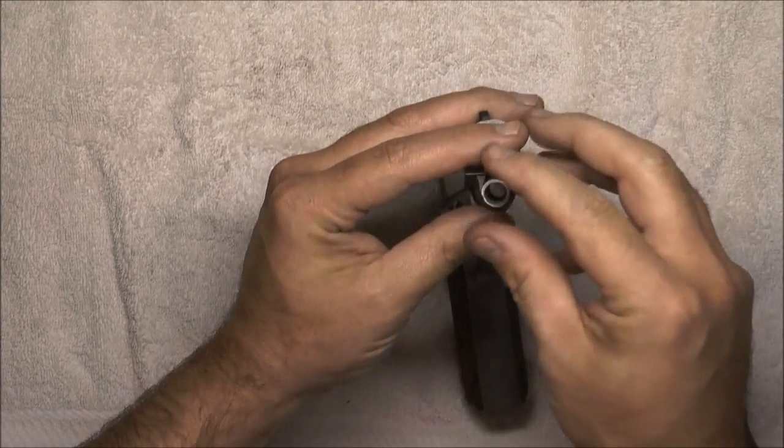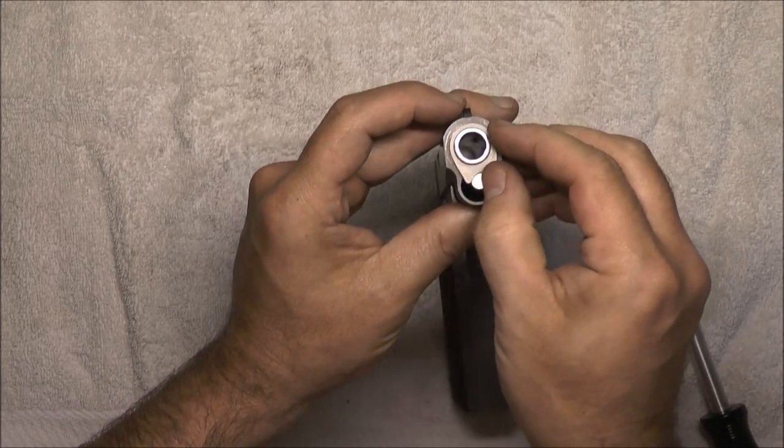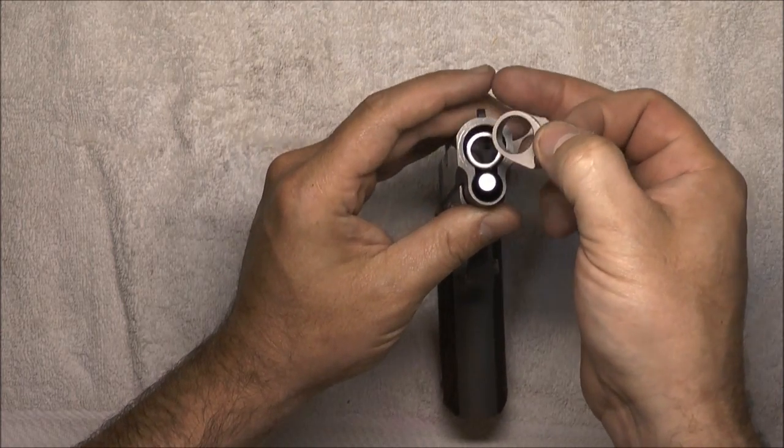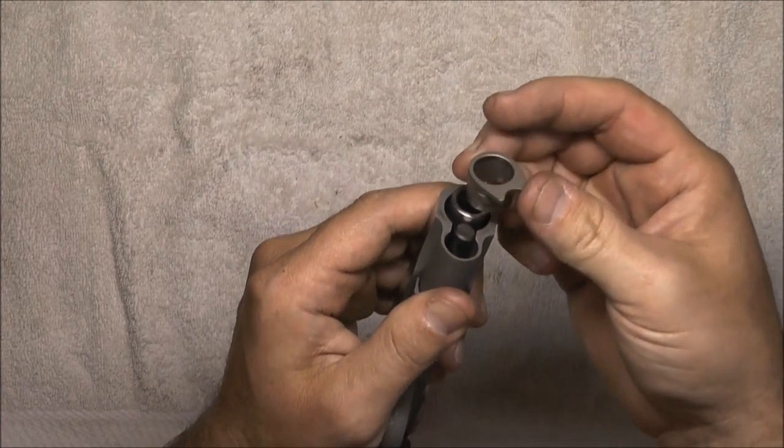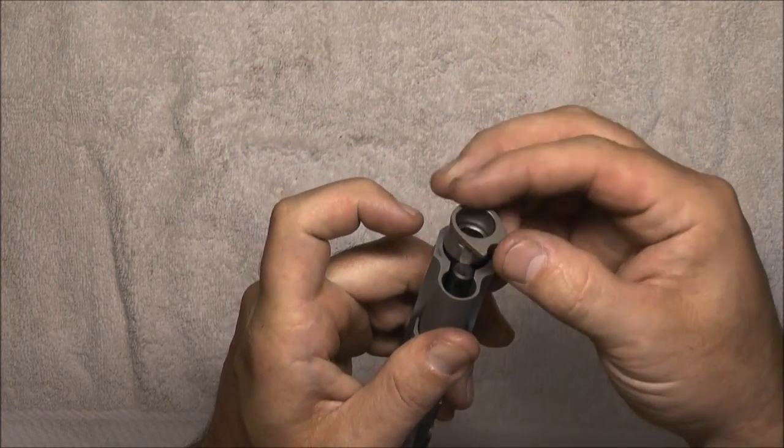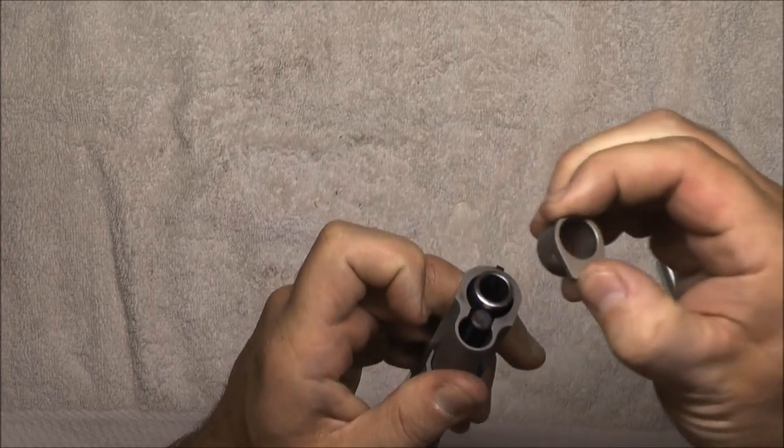So plug out, pull your spring out. Now this bushing has to be rotated back around to the other side and it will come out. And the reason it's got to be rotated like that, there's a little bump right here that has to come through this notch. And that's the only way it's going to come out.